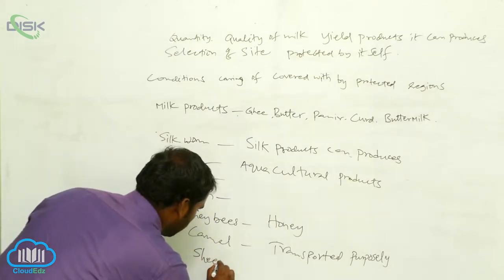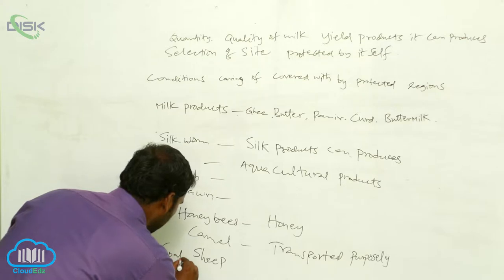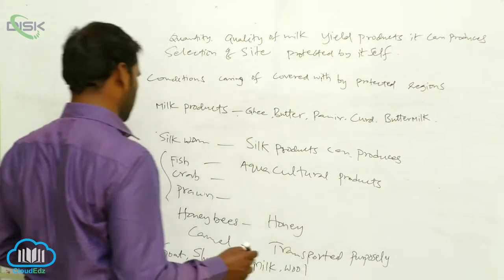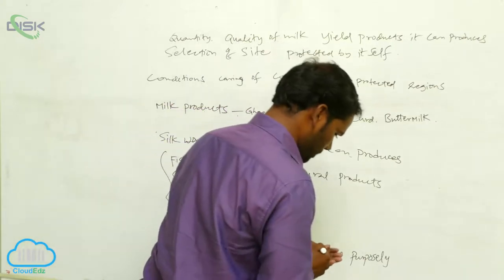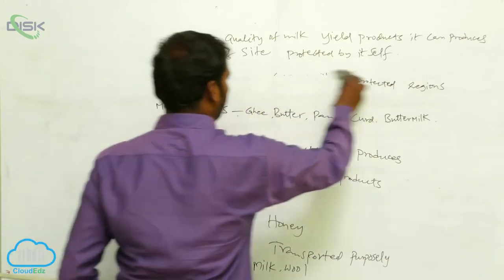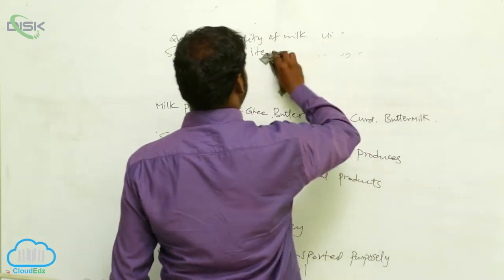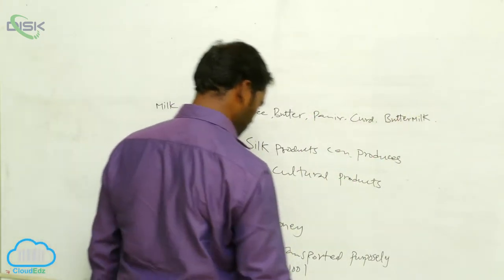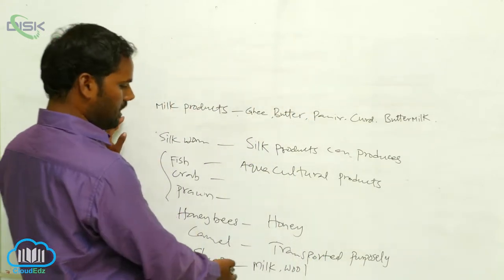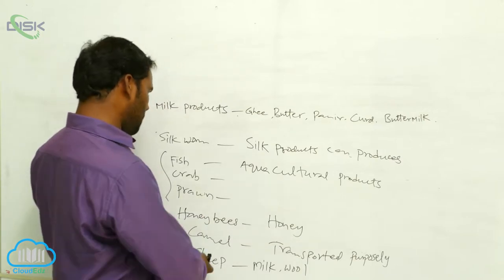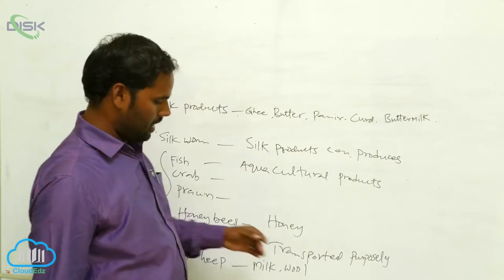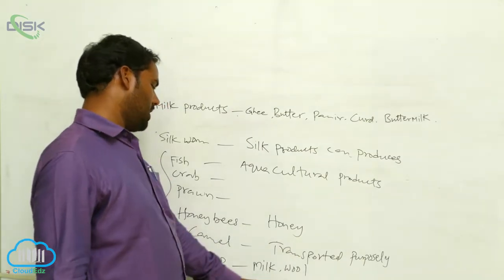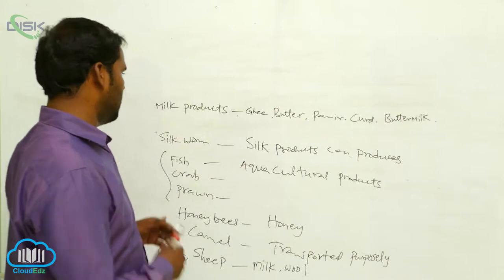Sheep and goat — milk and wool purposes. Next, goat and sheep can give us milk and wool. It is highly marketed in our country, our state, and other states. It can produce flesh and meat for marketing purposes, and is also exported to other nations.